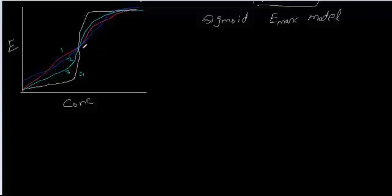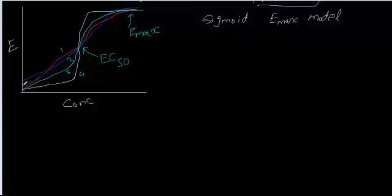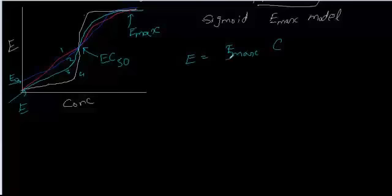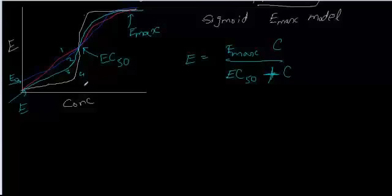In all these examples you may have noticed the EC50 is the same, Emax is the same, and the initial effect is the same for examples 1, 3, and 4, while example 2 has a minimal baseline effect E0. They all follow the same equation: E = Emax × C / (EC50 + C), but there is a subtle difference in the steepness of the curvature.